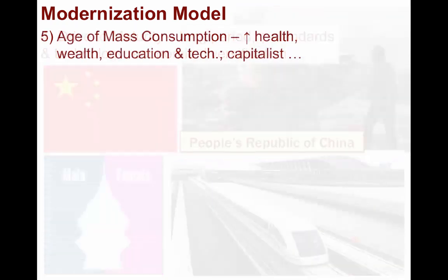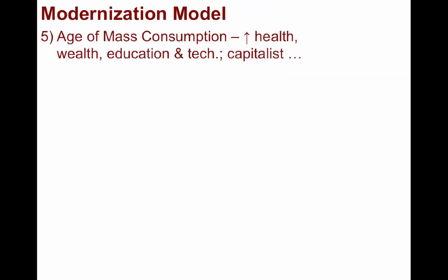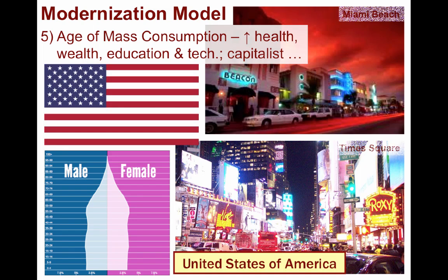Finally, many core states have achieved the age of high mass consumption, in which the majority of people experience high degrees of health, wealth, and education, as well as modern technology, across virtually all reaches within their borders. According to Rostow, these states are typically capitalist democracies where the population can choose how they want to spend their resources. Countries like the United States have been in this stage for decades, whereas others, like the Four Tigers, have recently achieved this status.